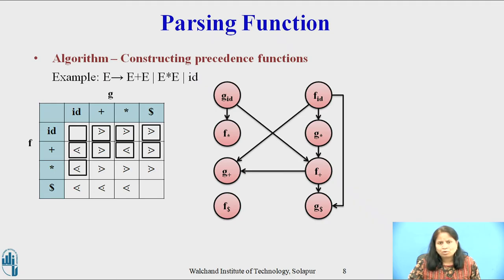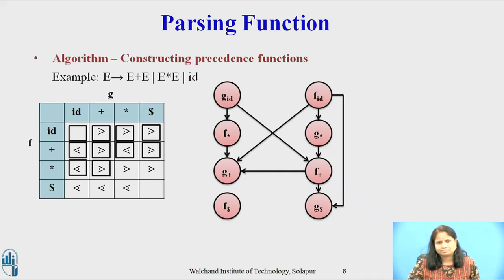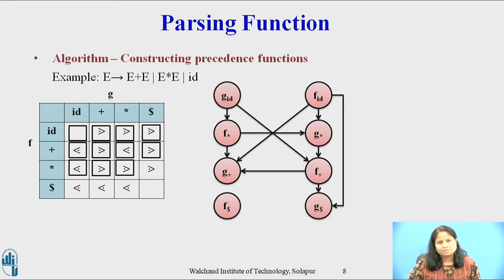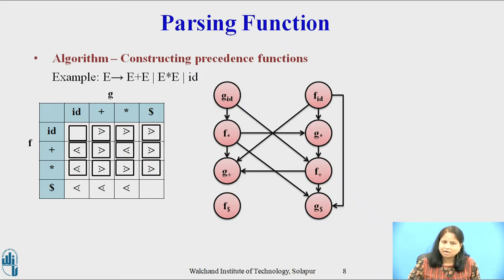Now consider the third row in the operator precedence relation table. The relation between f(star) and g(id) is yields-precedence-to, so there will be an arc from g(id) to f(star). The relation between f(star) and g(plus) is takes-precedence-over, so there will be an arc from f(star) to g(plus). The relation between f(star) and g(star) is takes-precedence-over, so there will be an arc from f(star) to g(star). The relation between f(star) and g(dollar) is takes-precedence-over, so there will be an arc from f(star) to g(dollar).